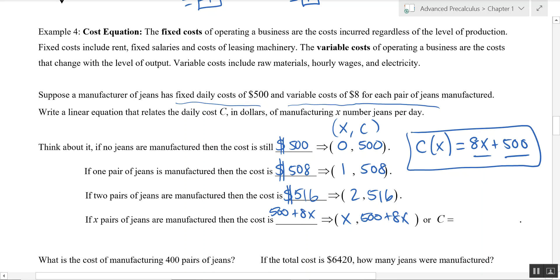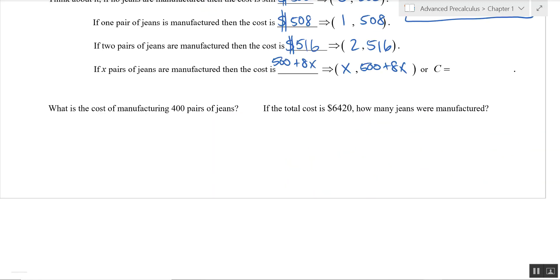Alright, go ahead and use this to answer the two questions down below. When you are answering these questions, make sure you use proper notation. We know that we are using C of X. So C of 400 shows that you are manufacturing 400 pairs of jeans. We're going to substitute in 400 for X. So 8 times 400 plus that fixed cost of 500. We get 3,200 plus 500. Or with units, $3,700.